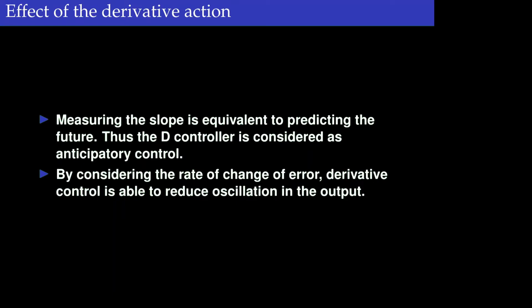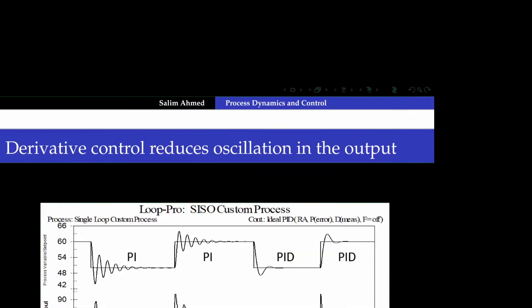When you measure the slope you are really trying to predict which way the variable is moving. In this sense the derivative control is also called anticipatory control. By considering the rate of change of the error, the derivative control can reduce the oscillation in the output.